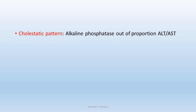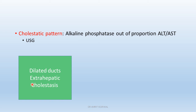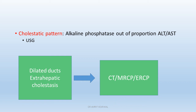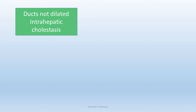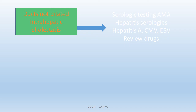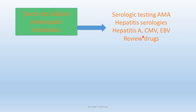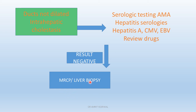If the patient has a cholestatic pattern — alkaline phosphatase elevated out of proportion to liver enzymes — do an ultrasound. If dilated ducts are seen, this is suggestive of extra-hepatic cholestasis. Then do CT, MRCP, or ERCP. If the ducts are not dilated, do serological tests: anti-mitochondrial antibodies, hepatitis serologies for hepatitis A, B, and C, Epstein-Barr virus, and review the drugs. If all results are negative, do MRCP or liver biopsy. If results are still inconclusive, a liver biopsy may ultimately be required.